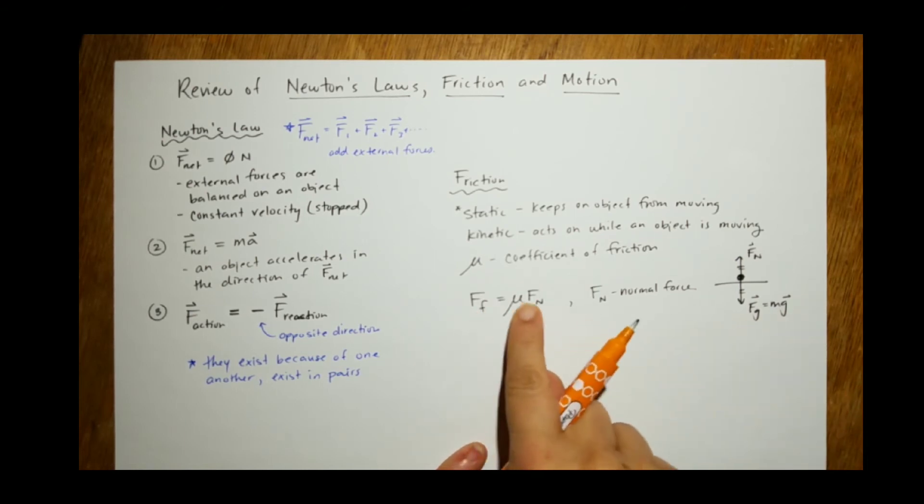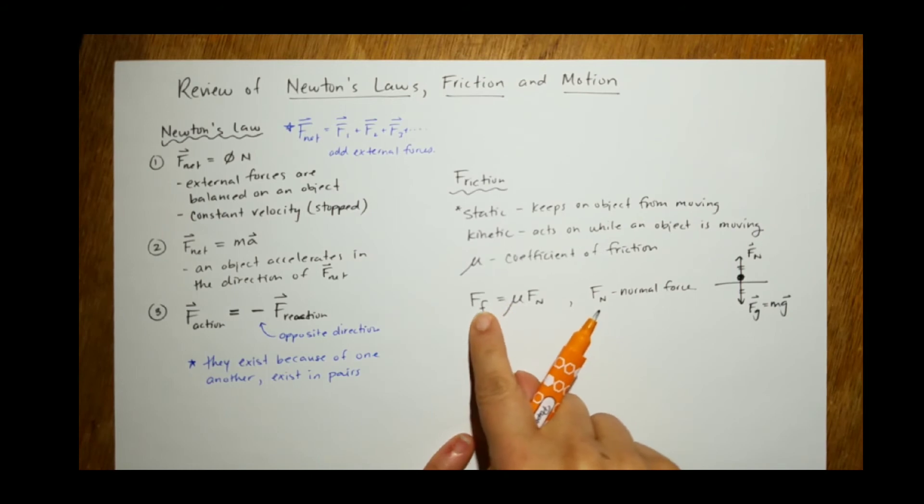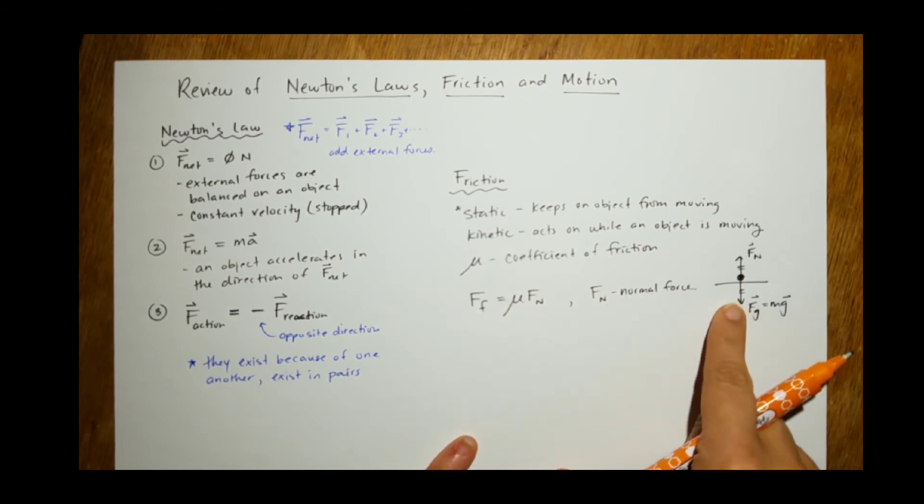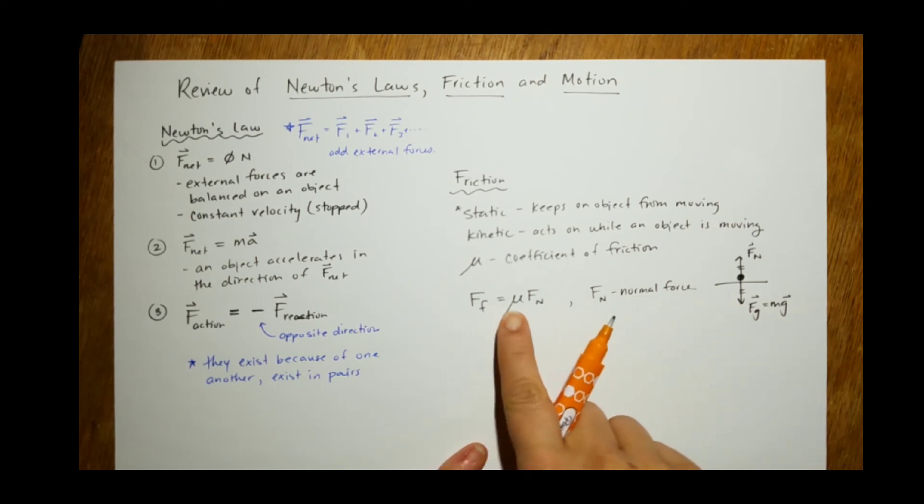Now, you notice these don't have vectors. The reason they don't have vectors is because usually friction is along the surface, and the normal acts up from the surface. So, these are just magnitudes. That's why there's no arrows on them.